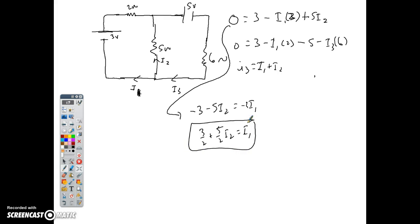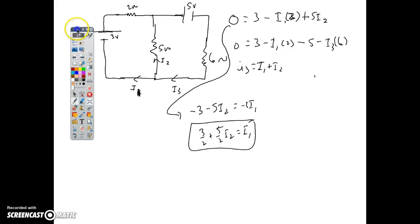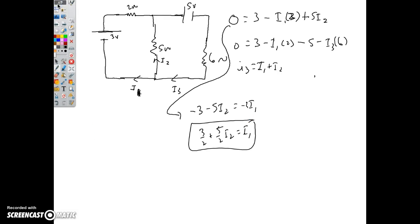What are you trying to do to me? Minus three minus five I2 equals negative I1 times two. Divide by negative two and I get positive three halves plus five halves I2 equals I1. I like that. So everywhere I have an I1, I'm gonna plug in the other two equations. You could not have picked a worse one. You really, this is amazing. Okay, plug it in. I got zero equals three minus two times this mess, three halves plus five halves I2, minus five minus I3 times six I3.